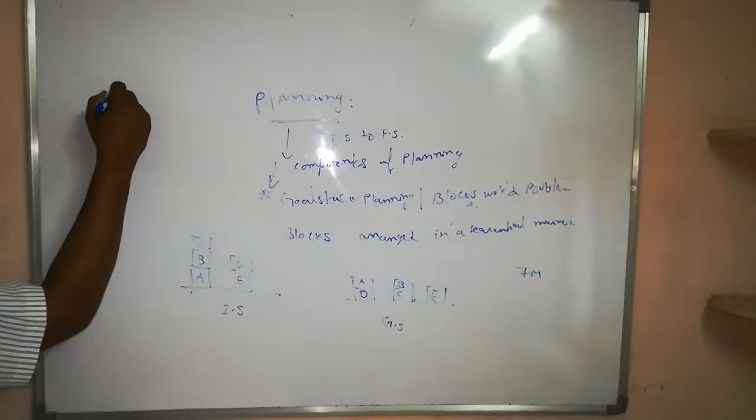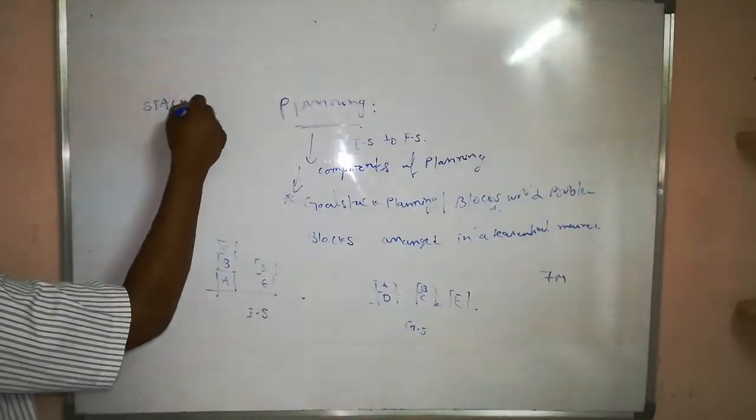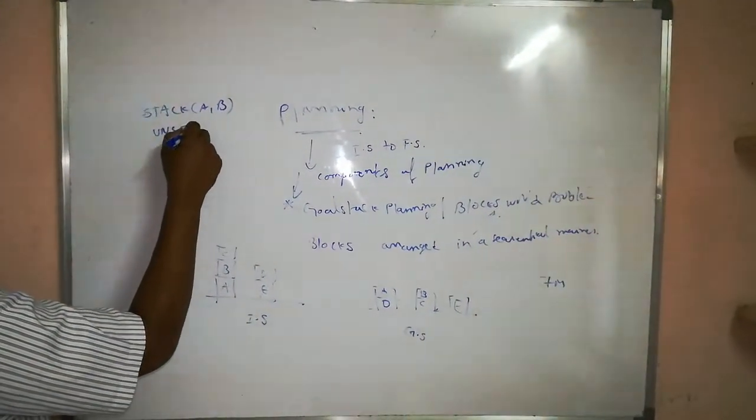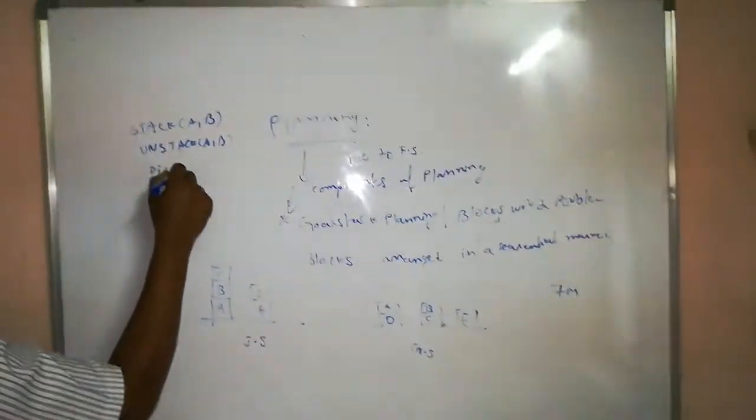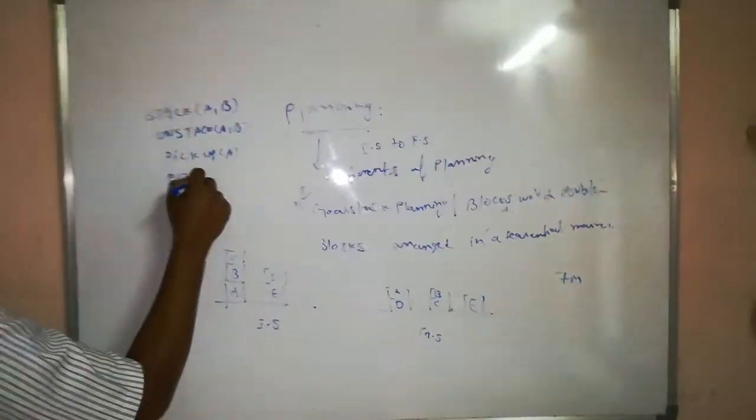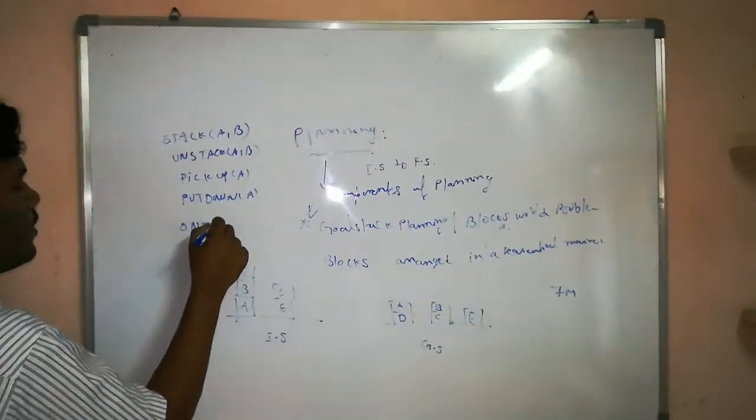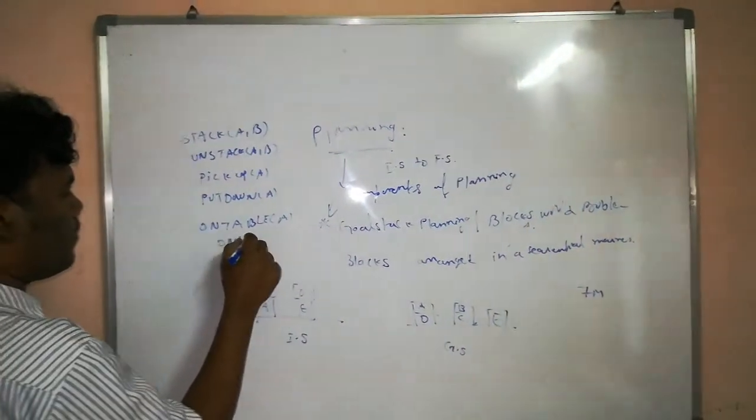And we are considering different types of operations also. So for example maybe here we are considering stack, stack of for example A, B, unstack of A, B, pick up, pick up of A, put down of A, on table of A, on of A comma B.